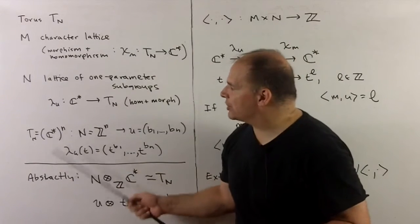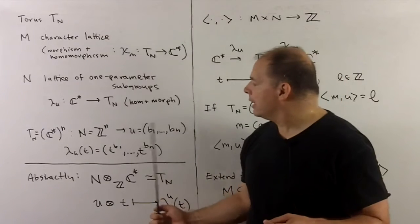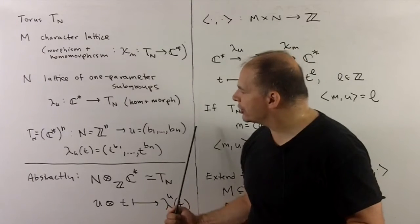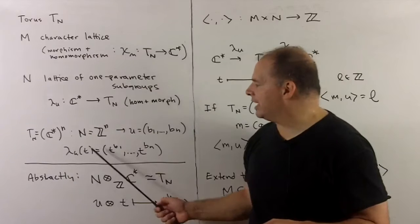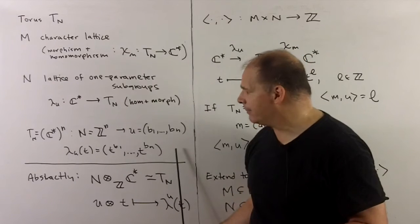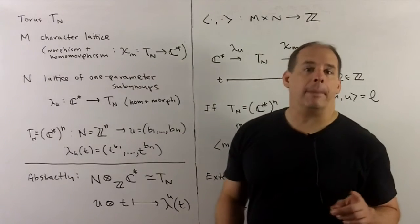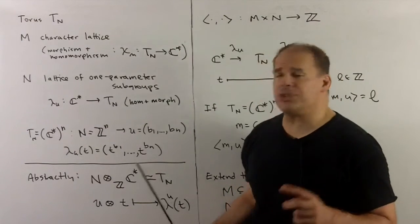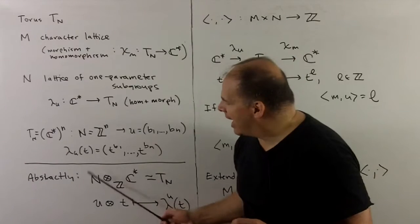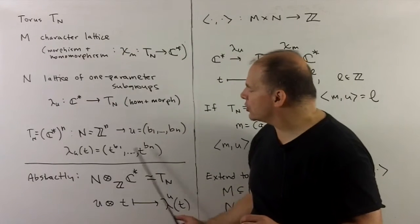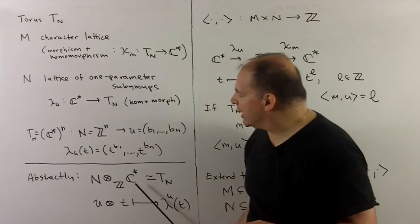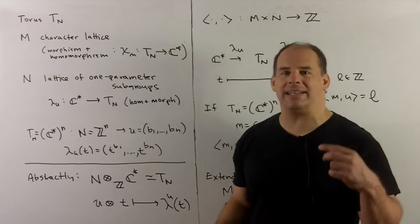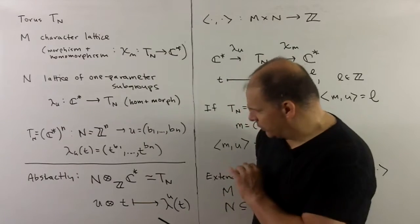Concretely, if T sub n equals C star to the n, we can think of N as just being Z to the n. Then these are just tuples: U equals (b1 through bn), all integers. For the one-parameter subgroup, we take our t in C star and raise it to the appropriate power in each coordinate. Abstractly, how do we think of our torus in terms of one-parameter subgroups? We have N as a group under addition, C star as a group under multiplication, and we take the tensor over the integers. The map is given by U tensor t going to the one-parameter subgroup for U applied to t. I'll leave that for you to sort out.